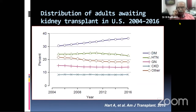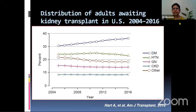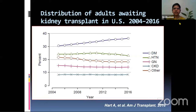The most common cause of end-stage renal disease is diabetes and hypertension, as shown in a graph from Miller 2020 edition. Besides that, glomerulonephritis, cystic kidney disease, and other causes also contribute to end-stage renal disease.